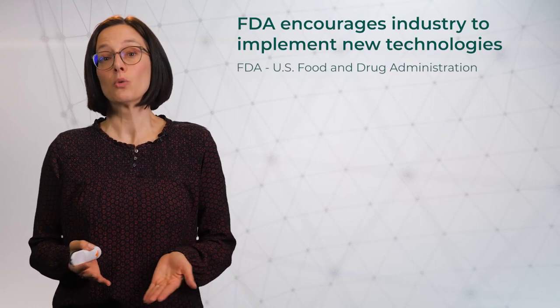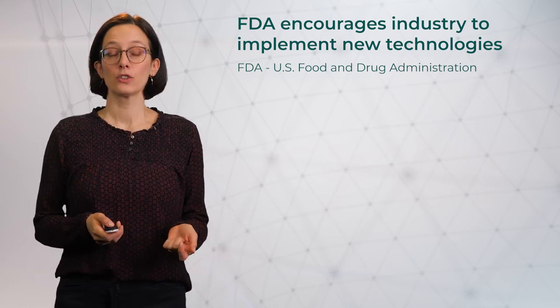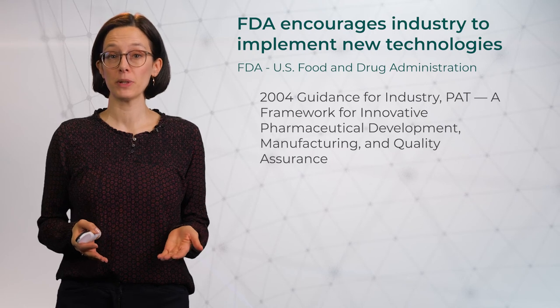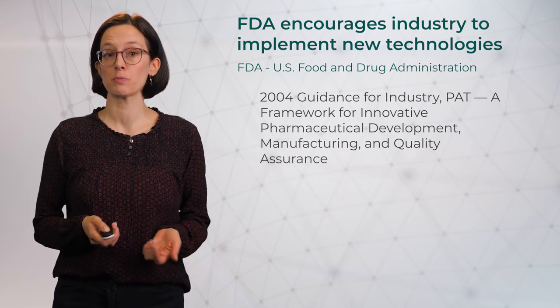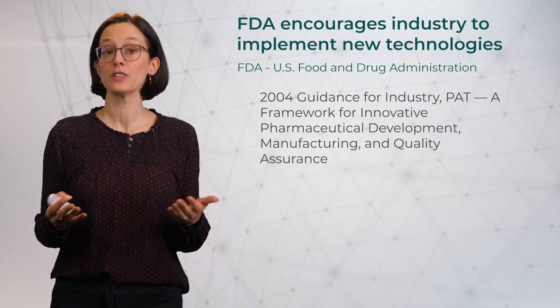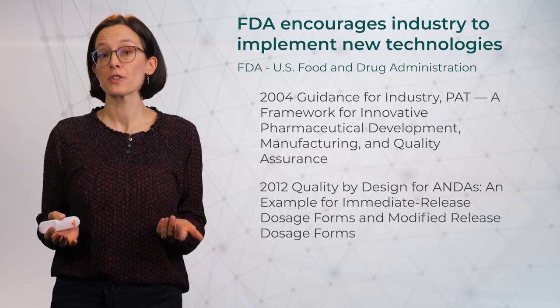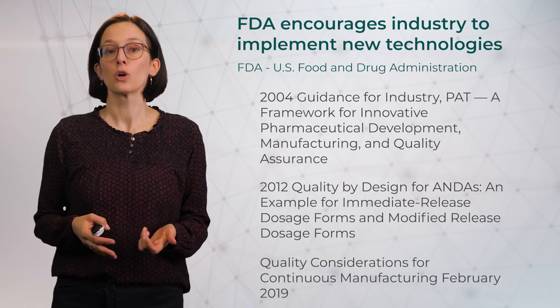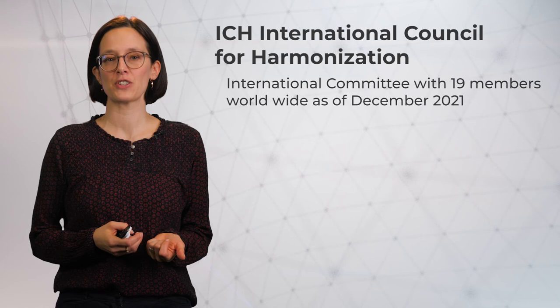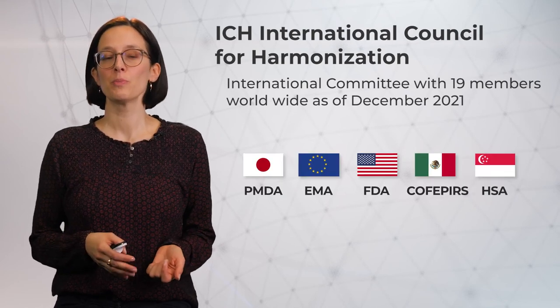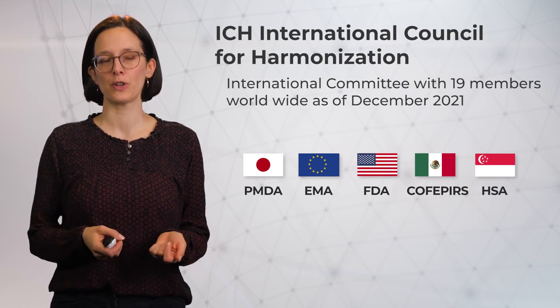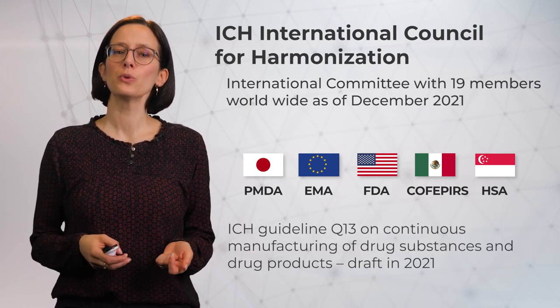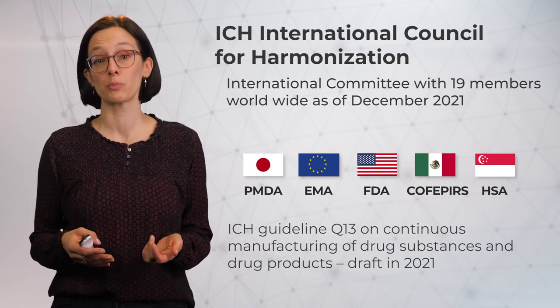The potential of continuous manufacturing and process analytical technology was realized early on by the FDA. In 2004, a framework for innovative pharmaceutical development, manufacturing, and quality assurance was published by the FDA, containing key elements relevant for continuous manufacturing. This was followed by relevant documents in 2012 on the quality by design approach and in 2019 on quality considerations for continuous manufacturing. The ICH — the International Council for Harmonization, which has 19 members around the globe as of 2021 — also works to implement continuous manufacturing, and in 2021 the Q13 guideline on continuous manufacturing of drug substance and drug products was published.